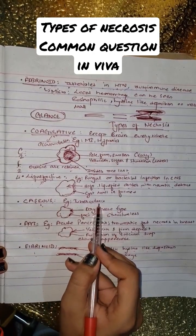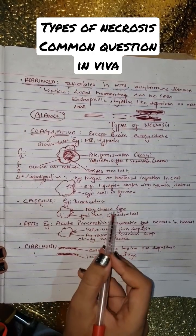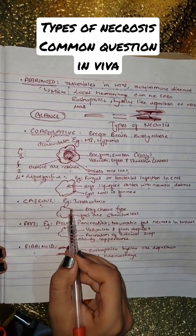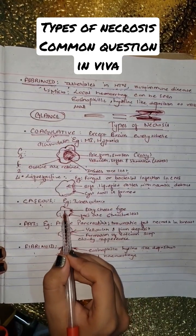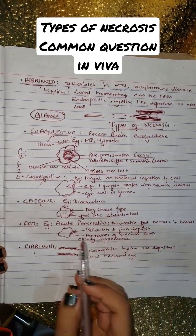Caseous, as seen in tuberculosis, resembles dry cheese type. It is yellowish in color and the insides are soft while foci are structureless.